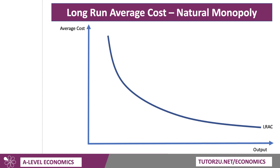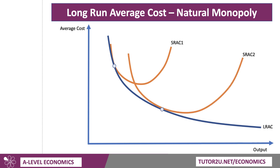It's downward sloping. It's much more efficient to operate at a much higher level of output. If we think about scaling up production, we go from AC1, a fairly small scale production plant, to AC2, to AC3, as we're scaling up production, so the unit cost of production is coming down and down and down.